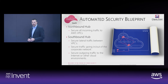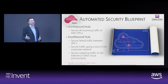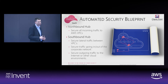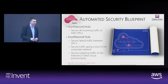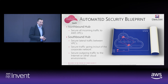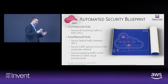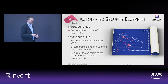Let's look at the Cloud Guard automated security blueprints. It's basically comprised of two major instances: the northbound hub and the southbound hub. The northbound hub is responsible for the security of all incoming traffic into the AWS VPCs. The southbound hub is responsible for securing all lateral traffic between VPCs, securing traffic going from the cloud to your corporate network, and securing any outgoing traffic to the internet or other clouds, creating a perimeter that protects your entire cloud environment.